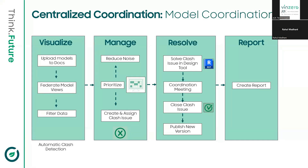Model coordination sits on the principles of centralized coordination. In the model coordination module in ACC, the workflow is done in four parts. The first part is called Visualize, second is Manage, then Resolve, and finally Report. In Visualize, you upload models to Docs — the common data environment — and create federated views, filtering the data needed for clash detection. Once set up, you move on to the clash matrix where you can prioritize and look at clashes. In Resolve, you address issues in design tools like Revit. In Report, you create the clash detection report.